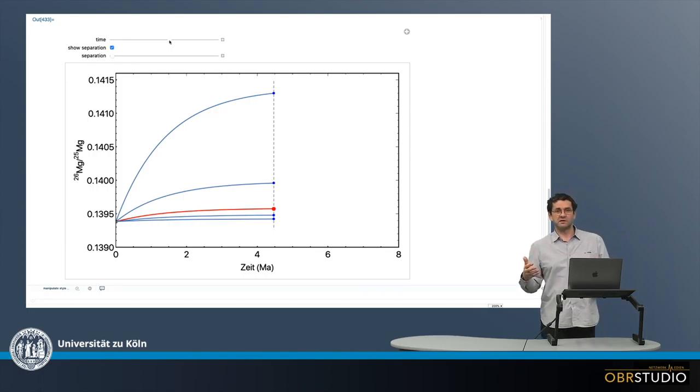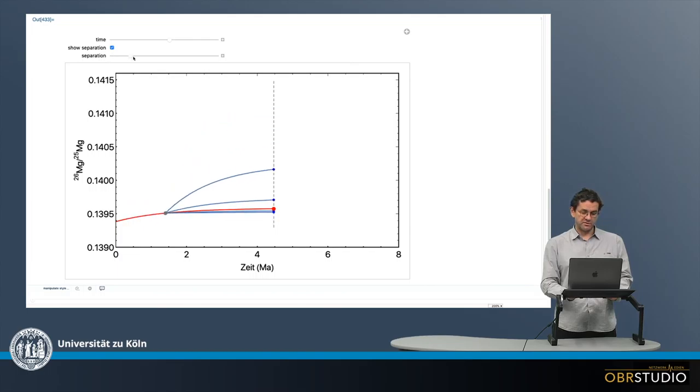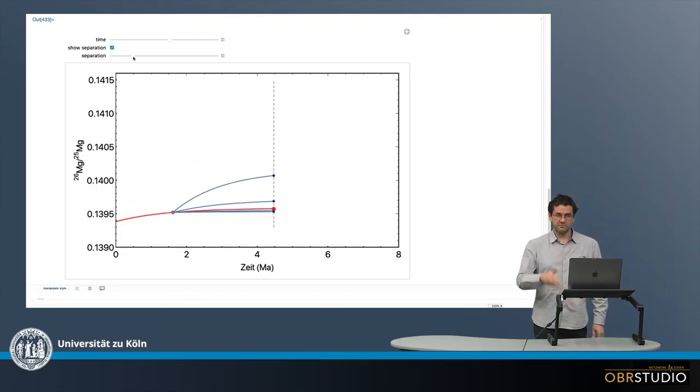But then these reservoirs might not evolve at the very beginning, but they might separate into these different components or reservoirs later. This can be shown here as well. Maybe the reservoirs form after roughly two million years. Then it looks like this.